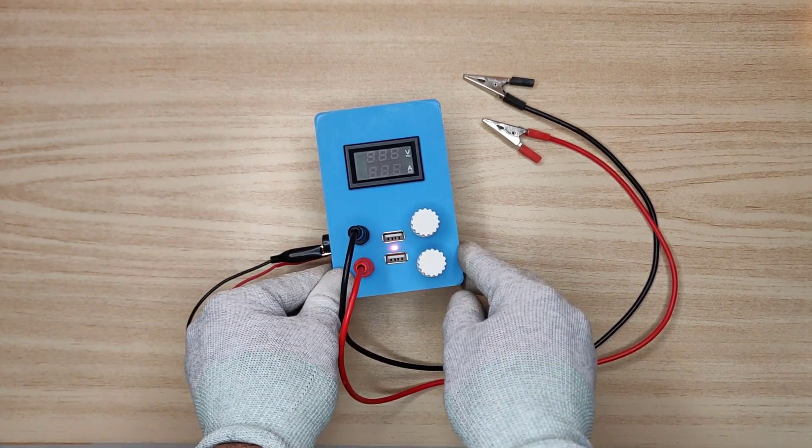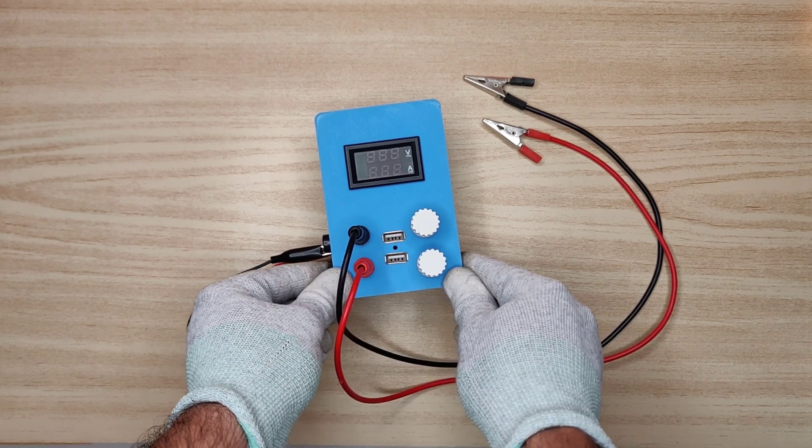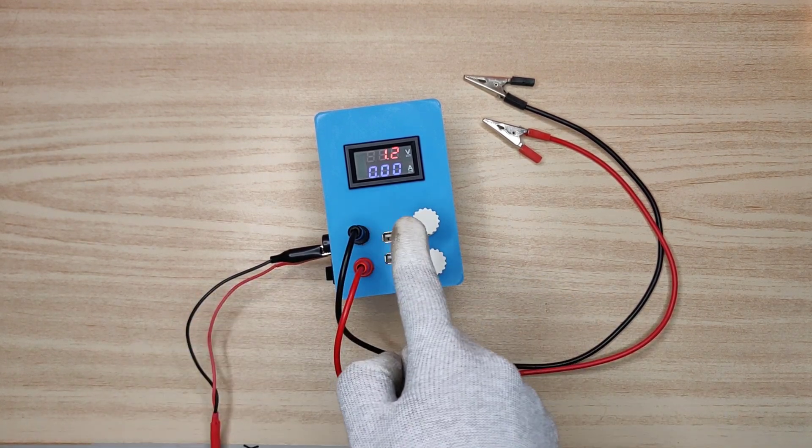Switch to upwards is USB on. Switch to mid is off. Switch to downwards is output supply on.